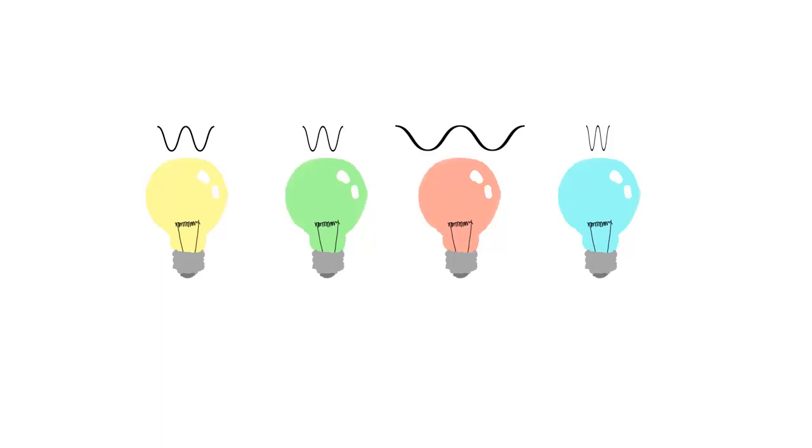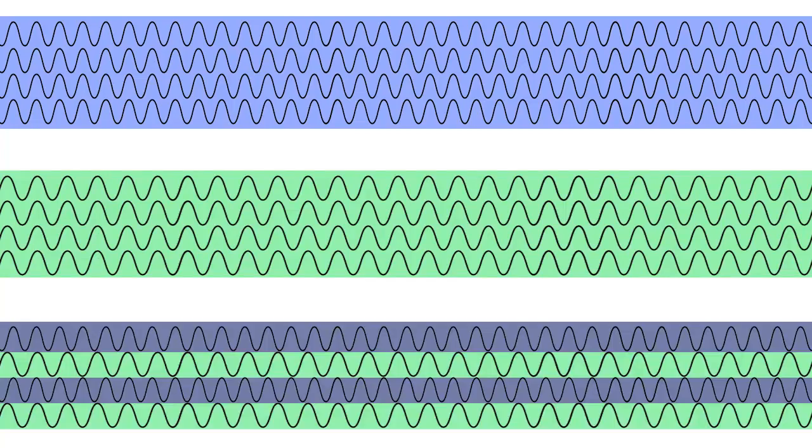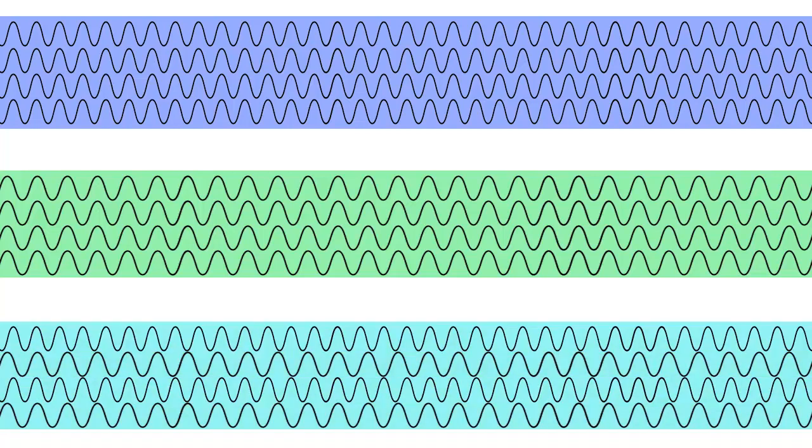But what would happen if we have a light beam with light waves that haven't got the same wavelength? Well, let's say this is how light waves in blue light looks. And this is how waves in green light looks. If we mix these two kinds of light waves together, like this, what will happen is that we will get a new color of the light. Cyan.